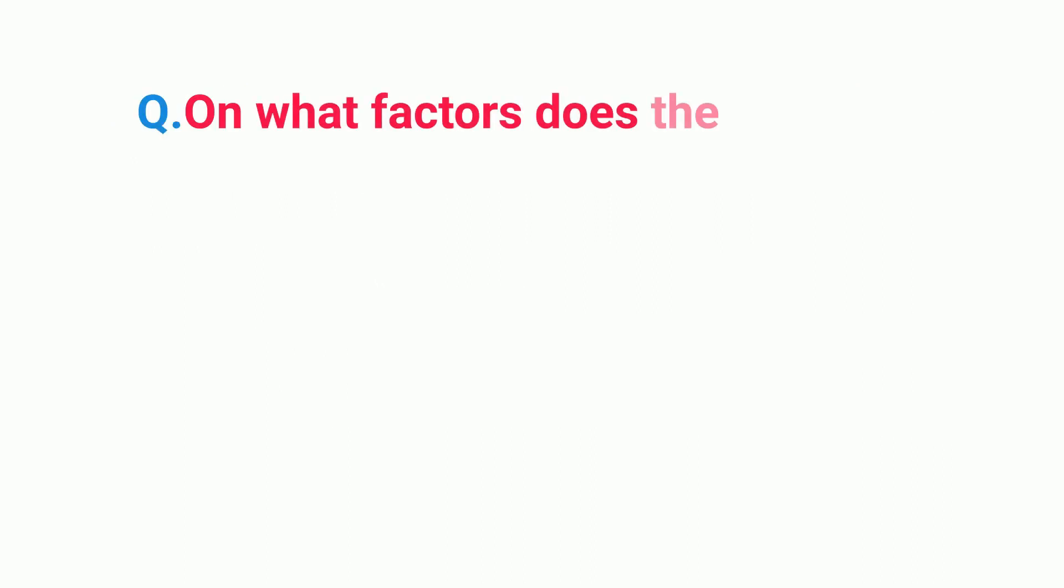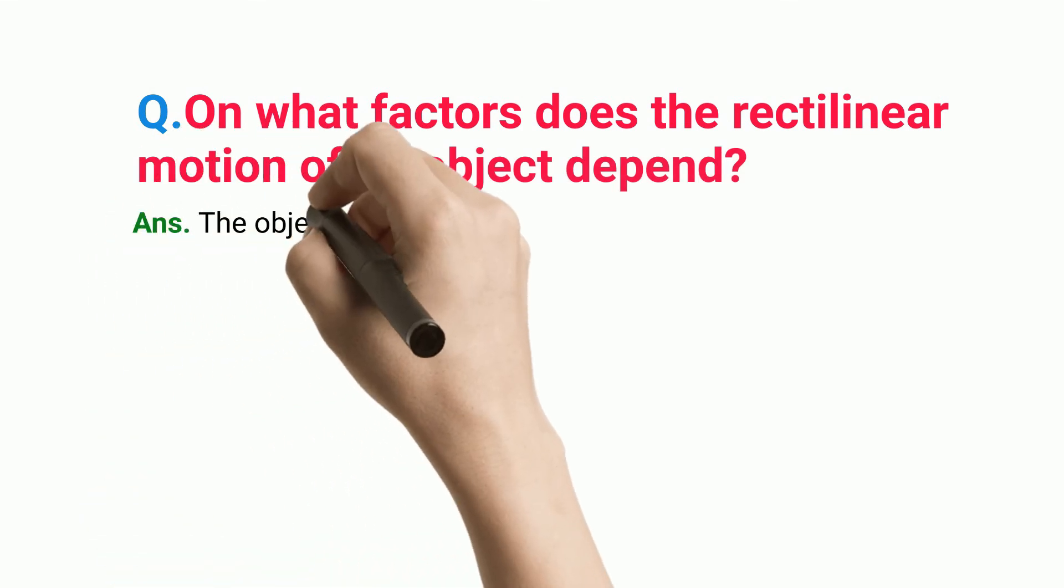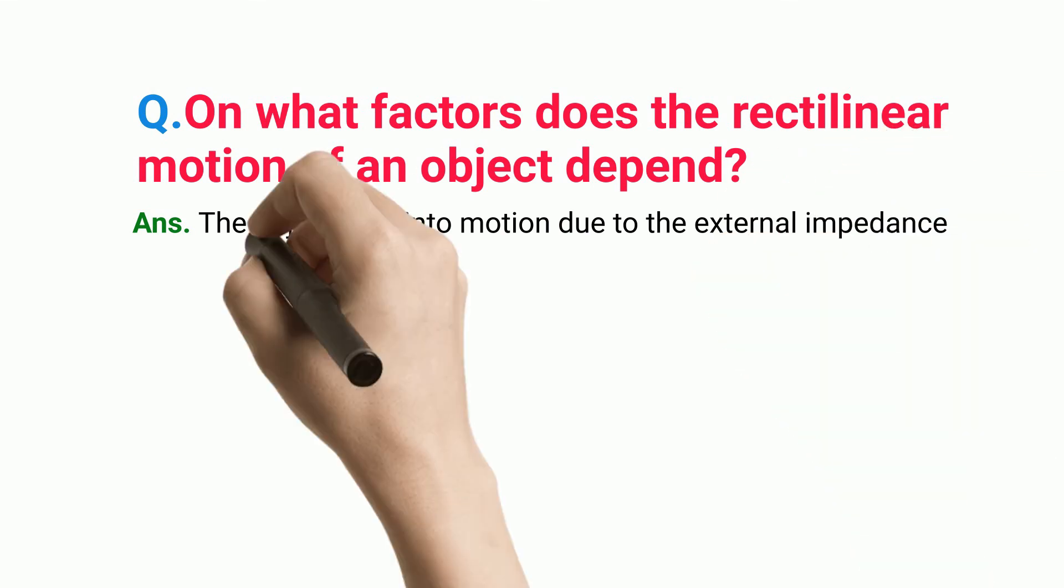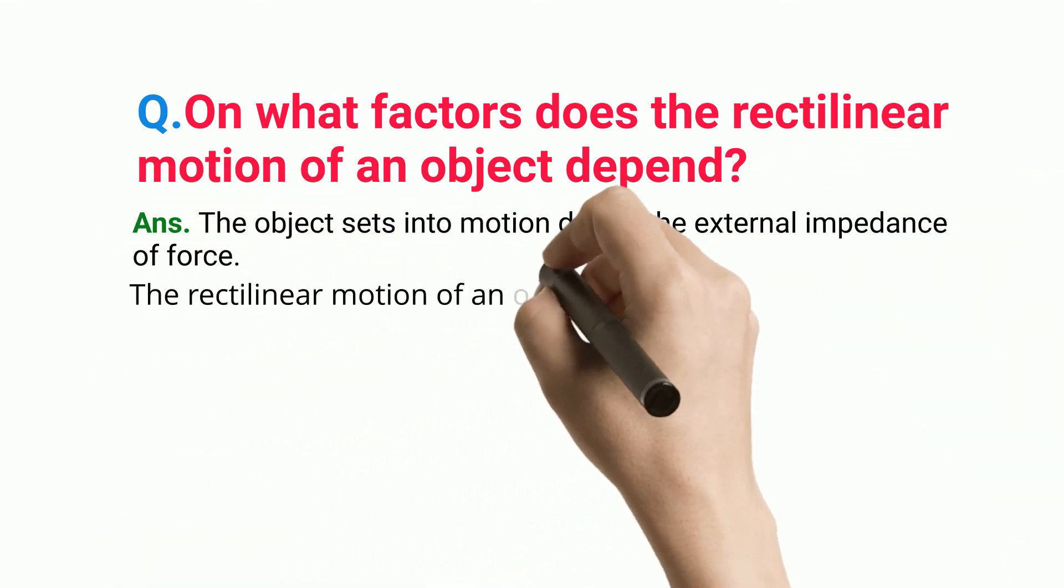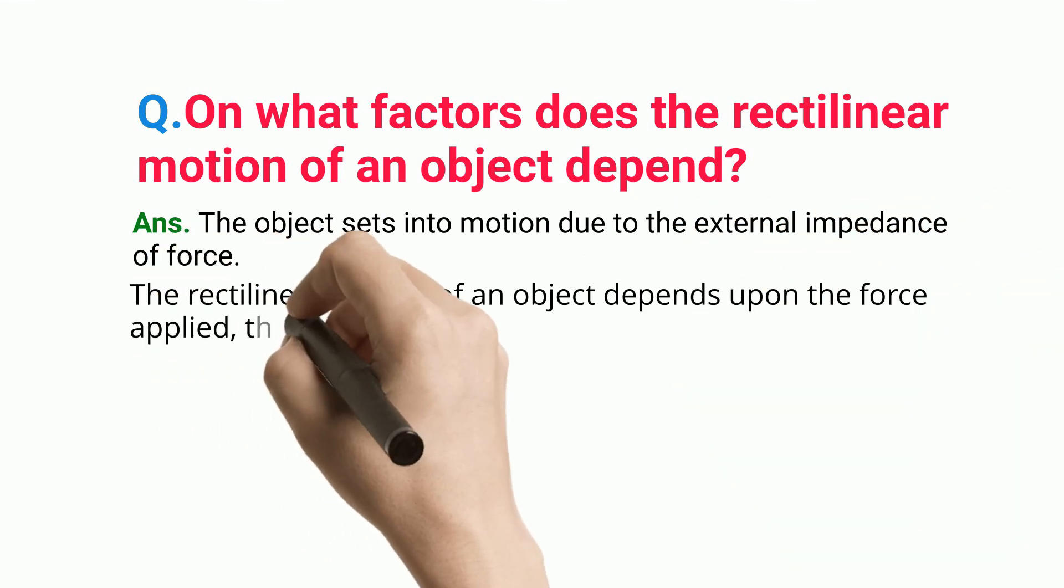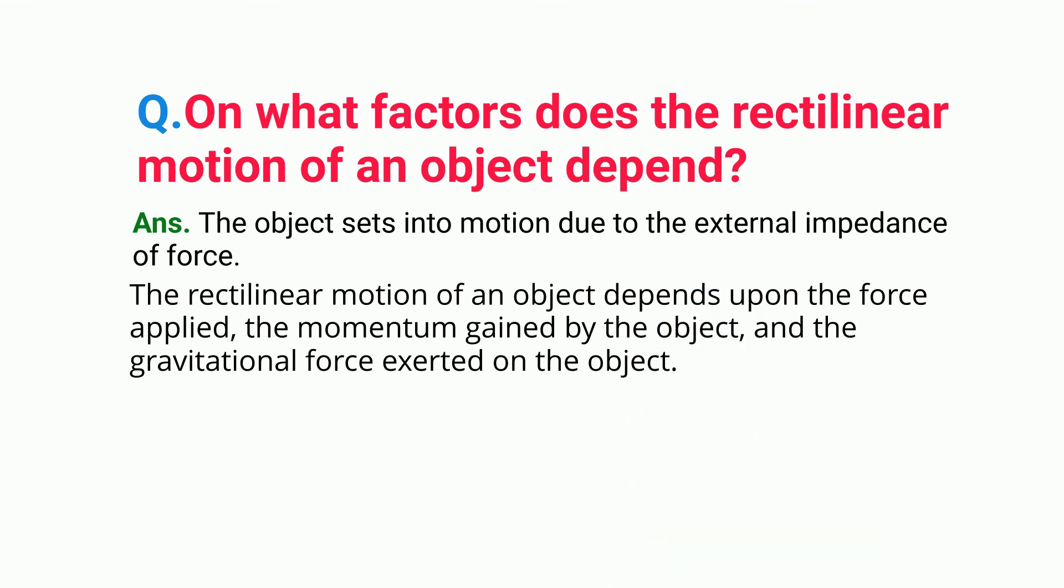On what factors does the rectilinear motion of an object depend? The object sets into motion due to the external impedance of force. The rectilinear motion of an object depends upon the force applied, the momentum gained by the object, and the gravitational force exerted on the object.